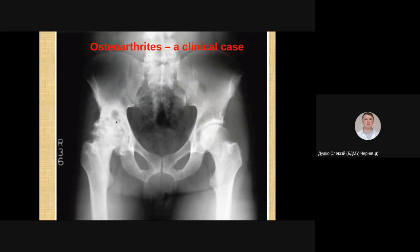Another thing we can note here are some translucent areas which correspond to cyst formation. There is a large cyst in the acetabulum and some small cysts in the femoral head, formed due to resorption of bone tissue.